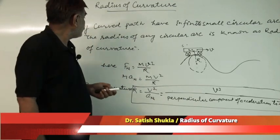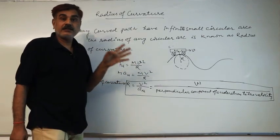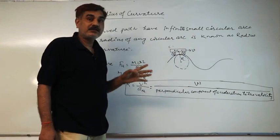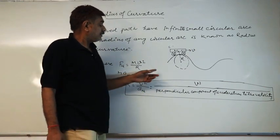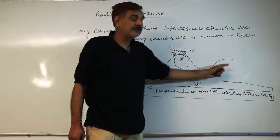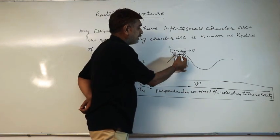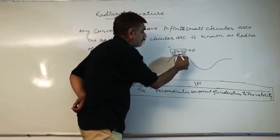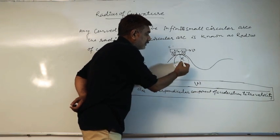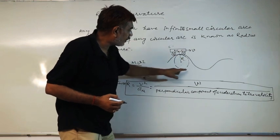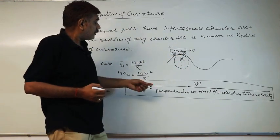Today I will discuss radius of curvature. Any curved path — a road or any other curved path — has infinitely small circular arcs. The radius of any such small circular arc is known as the radius of curvature. Suppose this is a curved path; at any one point, we can find the radius of curvature by completing that small arc into a full circular path, where the center and radius R are defined.